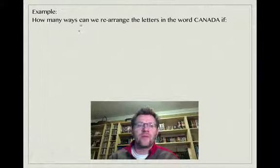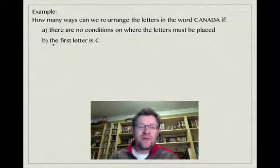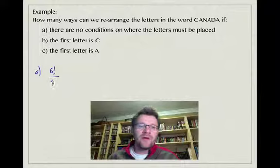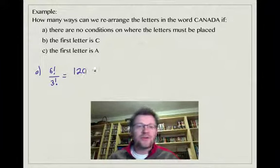Here's our example. How many ways can we rearrange the letters in the word CANADA if: a) there are no conditions on where the letters must be placed; b) the first letter is C; c) the first letter is A? Part A: if there's no conditions where the letters must be placed, we know that there's six letters total, but there's three of them that happen to be A's, so we're going to divide by 3 factorial. So 6 factorial divided by 3 factorial is a total of 120.